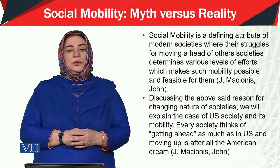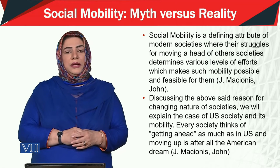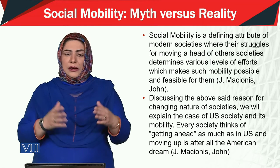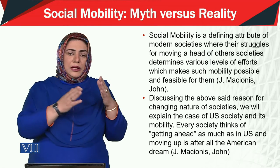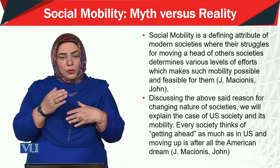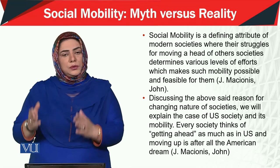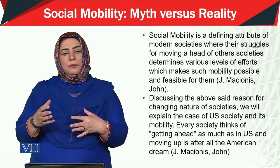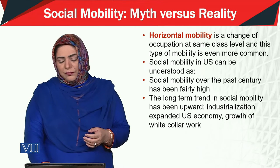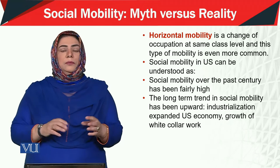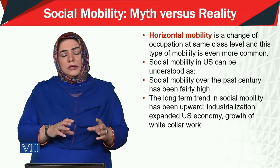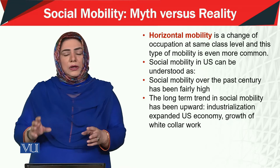Political sociology mein American philosophers ka American contribution bahut zyada hai. Isliye agar hum sabse pehle US ki example ko samjhein — US ka overall image, unki society ka image dekhein — wahan par kis tarike se afraad ke status ko improve karne ke liye baqaida taur par effort ki jaati hai, and that type of mobility is called horizontal mobility.